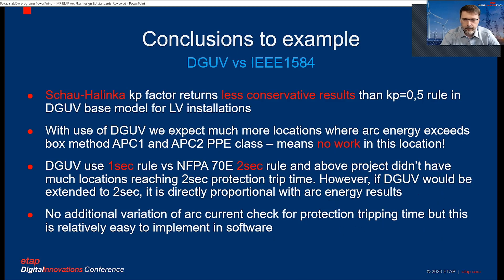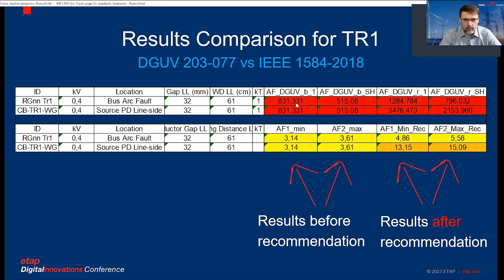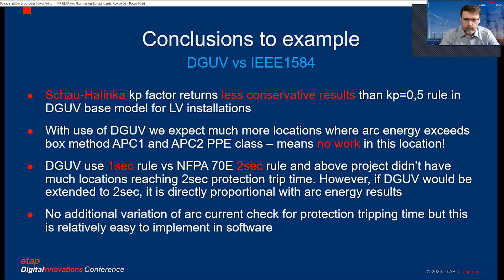So the conclusion is: if we take Shao and Halinka factors, it's getting less conservative — significantly lower values. And looking overall, we very quickly exceed the APC2 class, which is 7 kA for half a second at 400V. That's not a very hard test. DGUV uses one second, NFPA is a two-second rule. However, you can imagine that one second is very low time for escape.